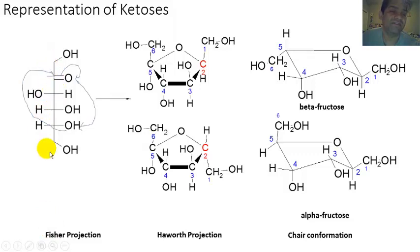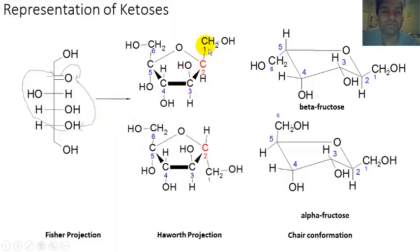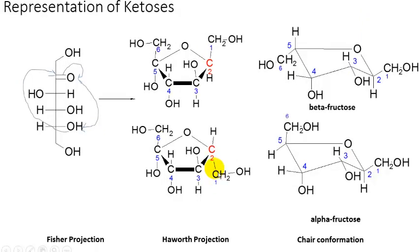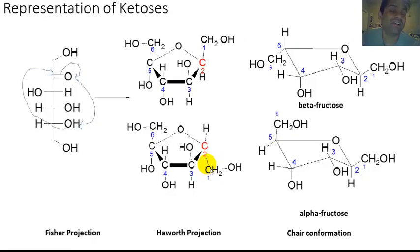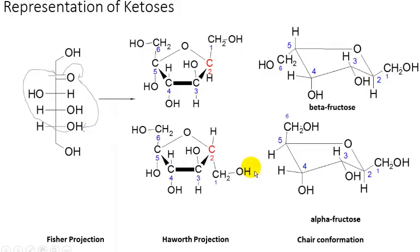In fact, this is the Fischer projection for fructose. Just as before, when this undergoes an intramolecular cyclization, the substituent on the anomeric carbon can be above the plane of the Haworth projection ring — in that case you have the beta anomer — or it can be below the plane of the Haworth projection ring, in which case you would have the alpha anomer.